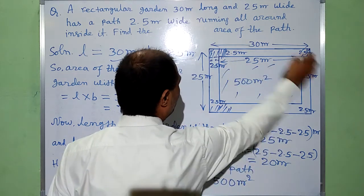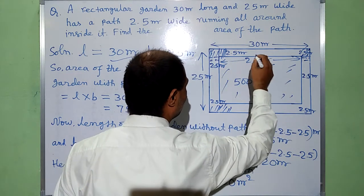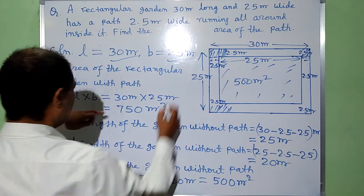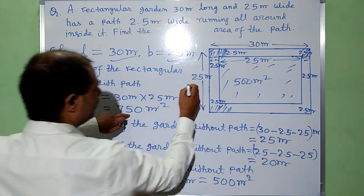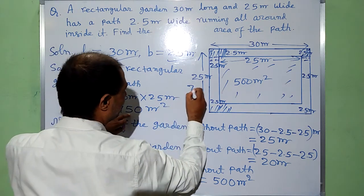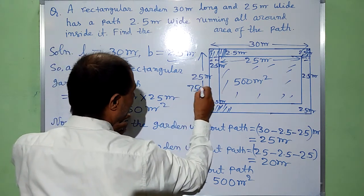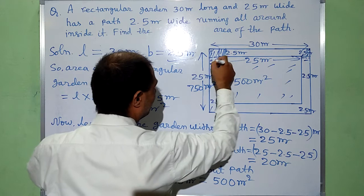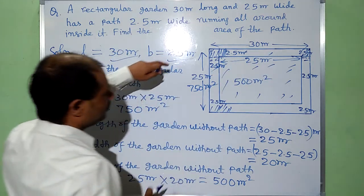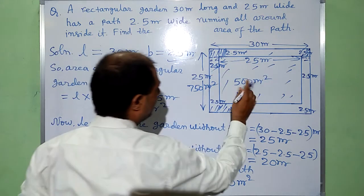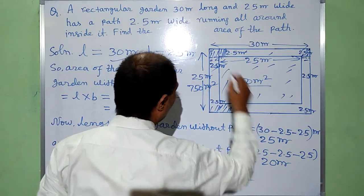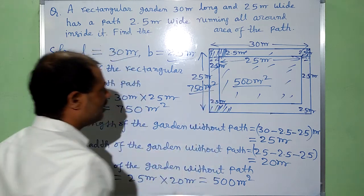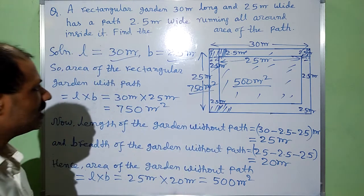The total area including this path is 750m². When we subtract 500m² from the total area of 750m², we get the area of this path.